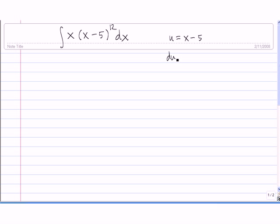Then du/dx is equal to the derivative with respect to x of x minus 5, and that's just equal to 1. So that means that du is equal to dx.